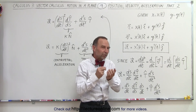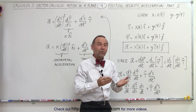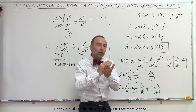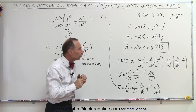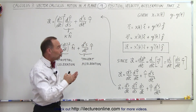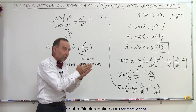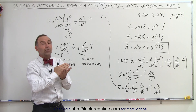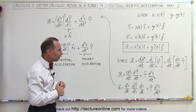Quite often we want to express acceleration not in terms of the x and y direction, but in terms of being parallel or perpendicular to the curve along which the particle moves. So we need to convert that into a parameter that is tangent to the curve and a parameter which is perpendicular — normal — to the curve. We do that as follows.